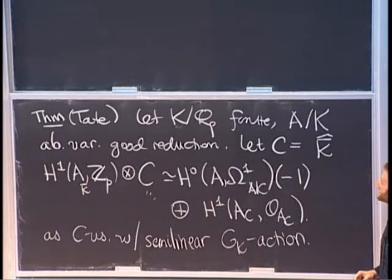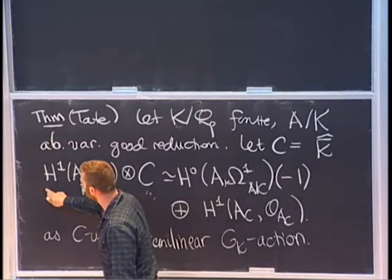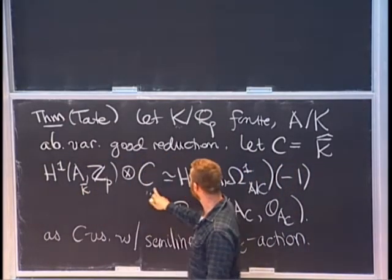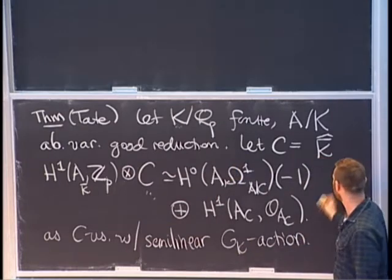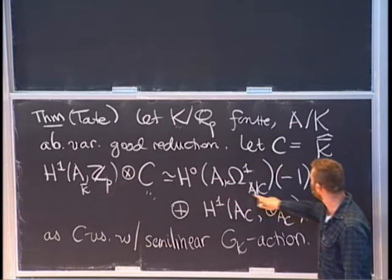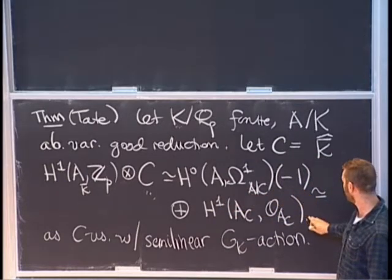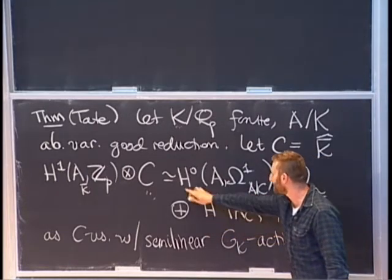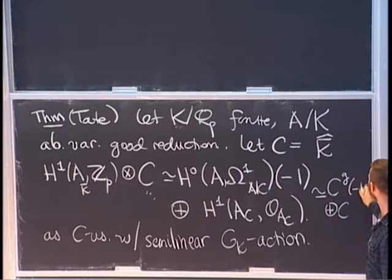So it's a very surprising theorem. This is a very rich representation of the Galois group, but somehow when I tensor it with C, it becomes something extremely simple. Both of these vector spaces do not have an action of G_K at all — they're just blank. This is just C^g, and this is just also C^g. So I can write this as C^g direct sum C^g(-1).